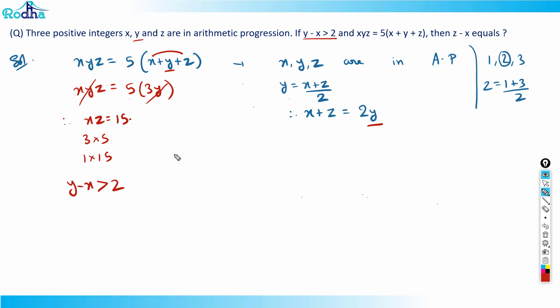So y minus x is more than 2, and x plus z is 2y. I want to convert into z and x. So in that case I can just put here y equal to (x plus z) by 2. So if I put y is equal to (x plus z) by 2 here, so (x plus z) by 2 minus x is greater than 2.